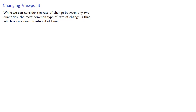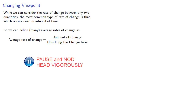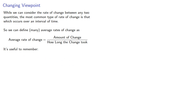While we can consider the rate of change between any two quantities, the most common type of rate of change is that which occurs over an interval of time. We can define many average rates of change as the amount of change divided by how long the change took. It will be useful to remember that an average rate of change is always associated with an interval with a definite start and end.